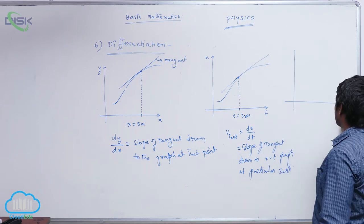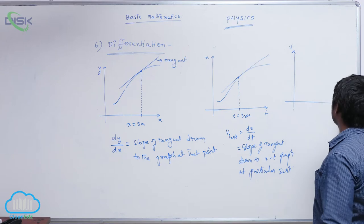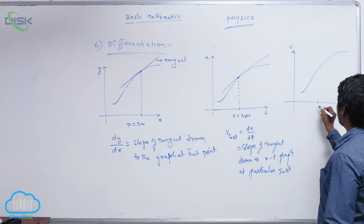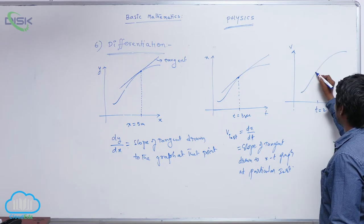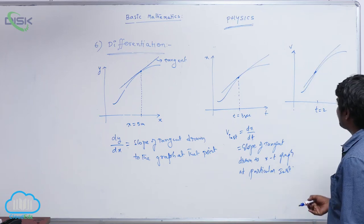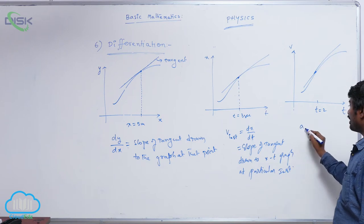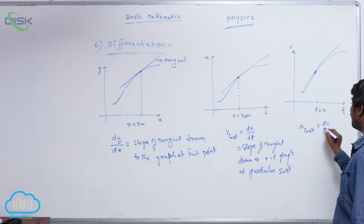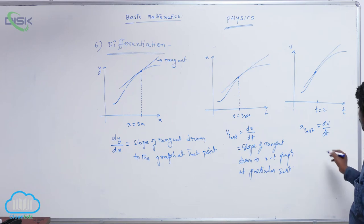Suppose if he gives v-t graph and at t equal to 2 seconds, let me take here and if I want to calculate instantaneous acceleration that is equal to dv by dt. So dv by dt is slope of tangent